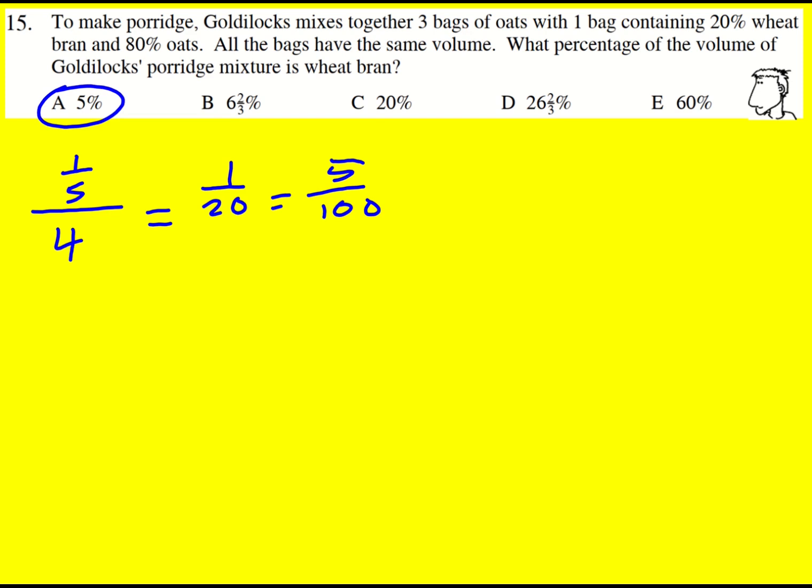An alternative is to say I'm going to have 100 grams per bag, so there's 20 grams of wheat bran, and then there's four bags, so there's 400 grams in total, and then convert that to a percentage. In fact, we can divide top and bottom by 4 to again give 5 over 100, and hence 5%.